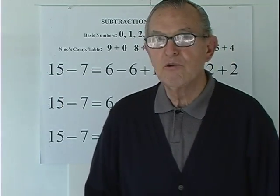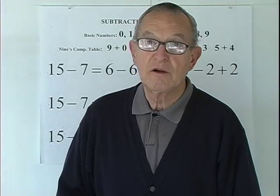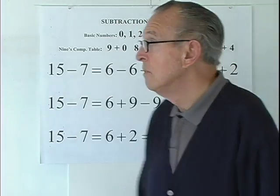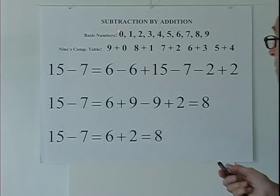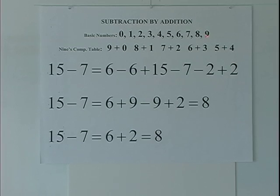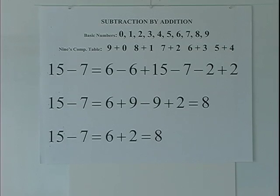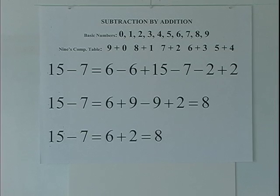In our base ten numeration there are ten basic numbers: zero through nine. We have these ten numbers and we can use one or more of them to write any other number. For example, if I want to write fifteen minus seven, I would use one, five, and seven one time each.